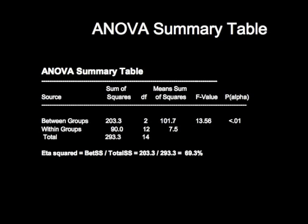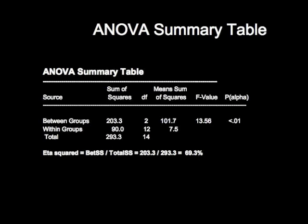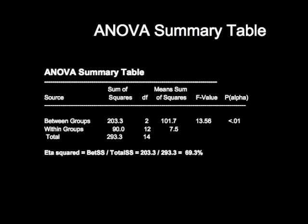It gives you the number of degrees of freedom for each of those components. For between group variation, there is k minus 1 degrees of freedom, where k is the number of groups you're comparing. It gives you the mean sum of squares, which is the sum of squares divided by the degrees of freedom. It gives you the ratio of the mean square between group and mean square within group, and that's under the column called the F value.